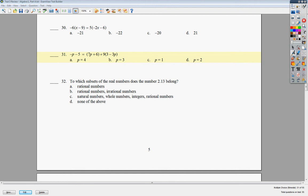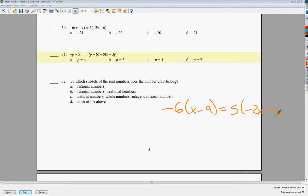I'm going to do number 30 now. So I have negative 6 times the quantity x minus 9 is equal to 5 times the quantity negative 2x minus 6. Draw my line. Negative 6 times 1, negative 6 times negative 9. Remember, negative times negative is positive. Positive times negative, positive times negative. This is negative 30.